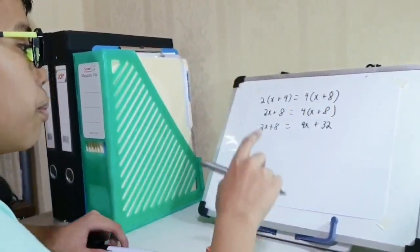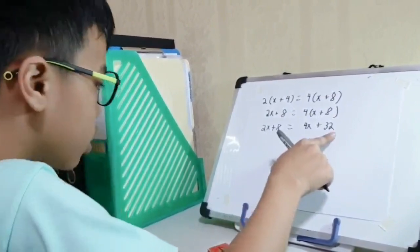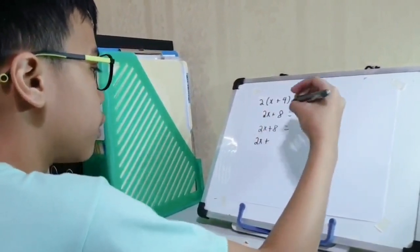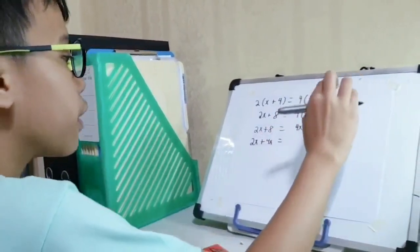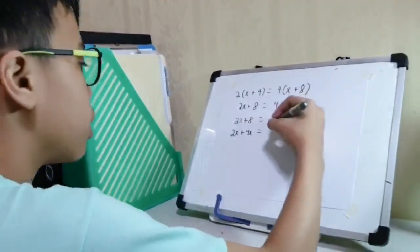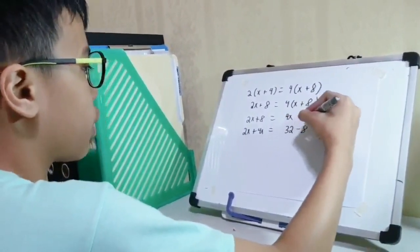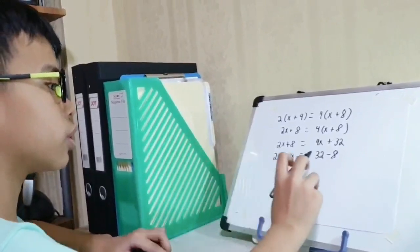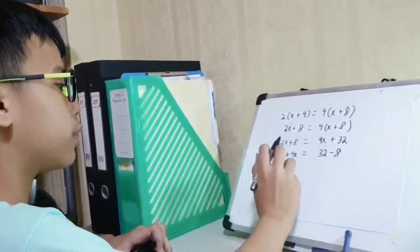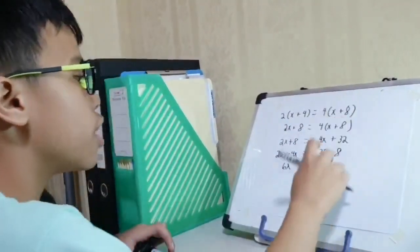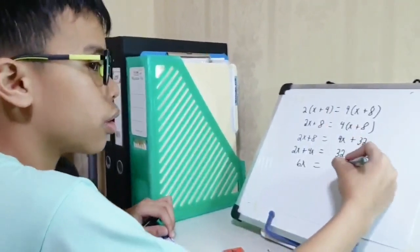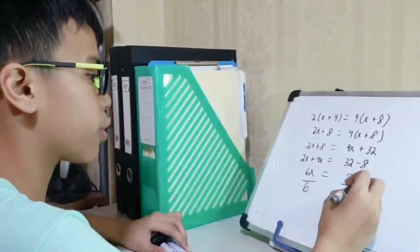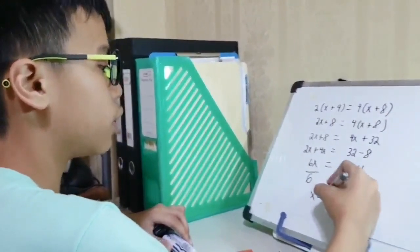We have to remove the parentheses, and we will try to combine the like terms and the constants. So 2X, then 2X plus 4X. Then 32 minus 8. We have successfully simplified this expression. Now let's proceed to solving. So 2X plus 4X is 6X. So 6X equals 32 minus 8, which is 24. Then divided by 6, 24 divided by 6 is 4. So X is 4.